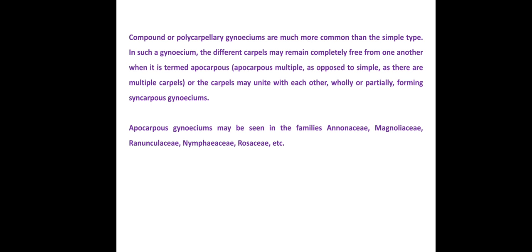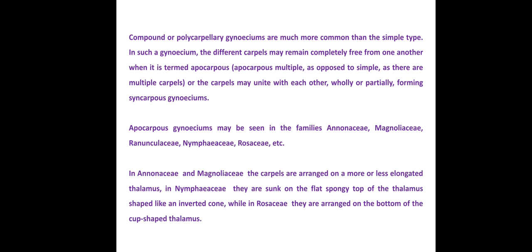Apocarpous gynoecium may be seen in the families Annonaceae, Magnoliaceae, Ranunculaceae, Nymphaeaceae, and Rosaceae. In Annonaceae and Magnoliaceae, the carpels are arranged on a more or less elongated thalamus. In Nymphaeaceae they are sunk on the flat spongy top of an inverted cone-shaped thalamus, while in Rosaceae they are arranged on the bottom of a cup-shaped thalamus.